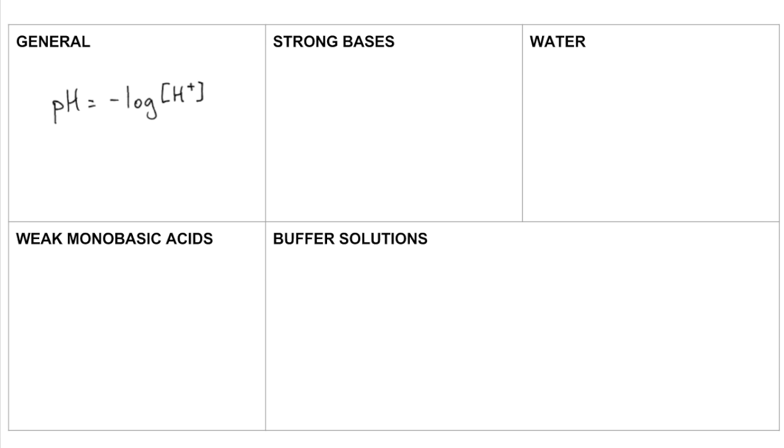So in general terms, the pH of anything is the minus log of the H plus concentration. And if you're given the pH, you can calculate the H plus concentration by 10 to the minus pH.